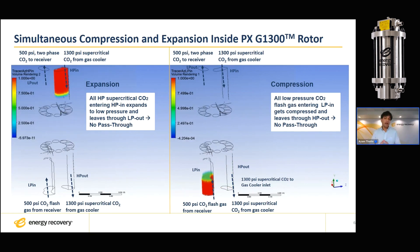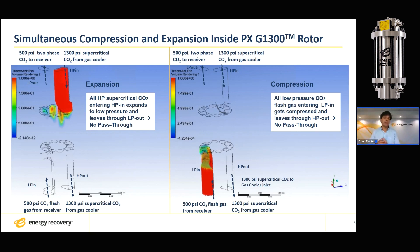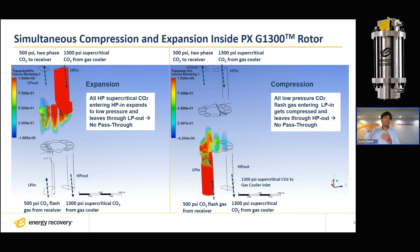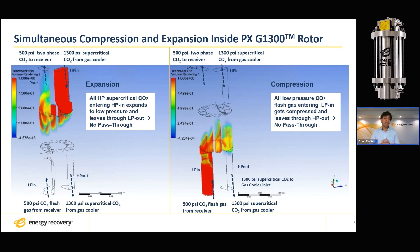And then the duct eventually gets exposed to the high-pressure pole. As soon as the duct is exposed to the high-pressure pole, there is a compression wave or acoustic wave that sets in, propagates back and forth inside the duct, and compresses that low-pressure flash gas into a high-pressure supercritical CO2 to the same pressure as the gas cooler pressure. Now, where is it extracting this energy required for this compression? There is no external mechanical or electrical energy required for this compression.